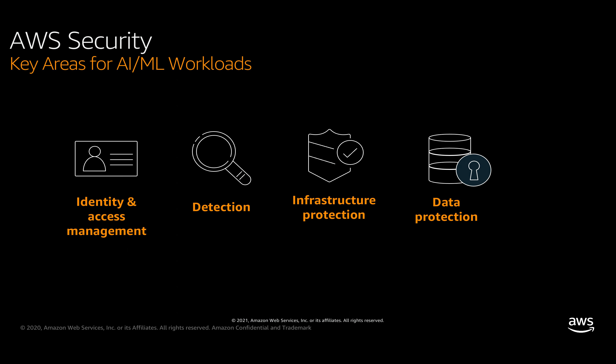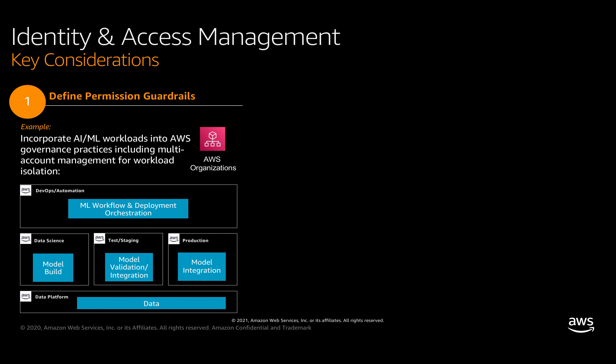The machine learning white paper was announced in 2020. Let's dive into some of the more service-specific announcements in the areas of security. We'll cover these across the categories of identity and access management, detection, infrastructure protection, and data protection. For each category, we'll first cover a few key considerations that align with the Well-Architected framework to highlight existing service features that may still be helpful in securing your machine learning workloads.